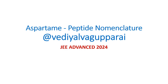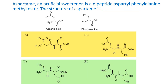Hello, welcome. In this video we are going to see about aspartame, a small dipeptide derivative which is used as a sugar substitute, and use that as an example in understanding peptide nomenclature. This particular question is taken from JEE Advanced 2024 question paper.